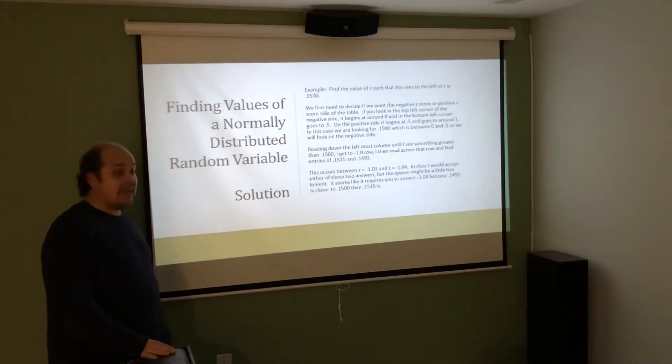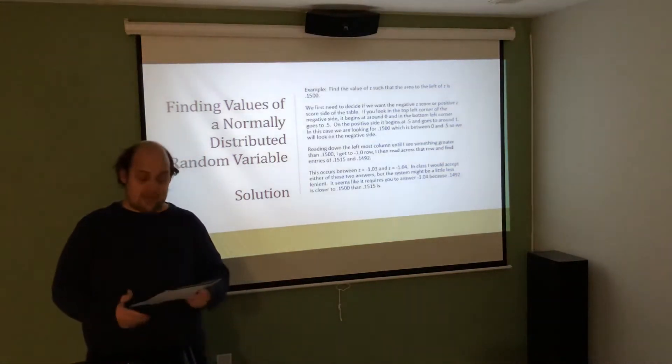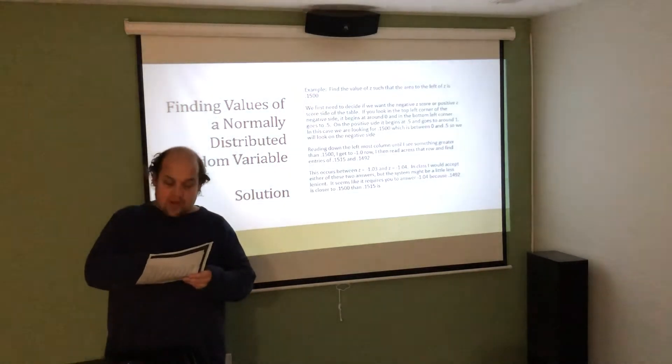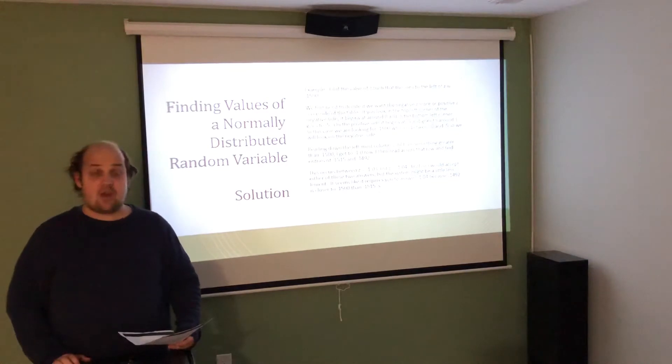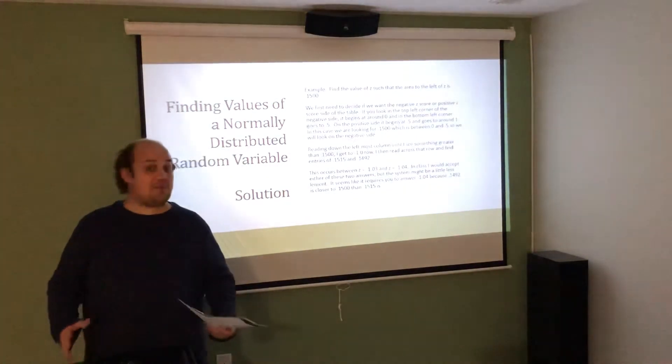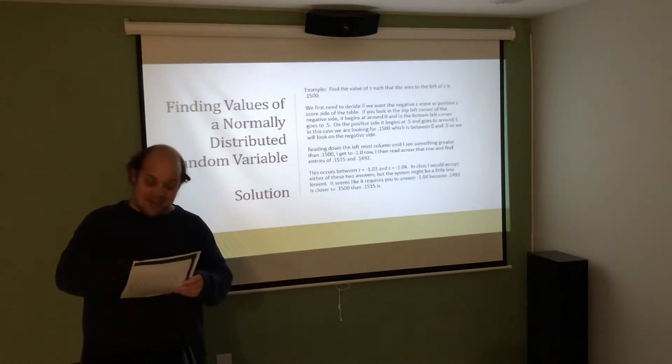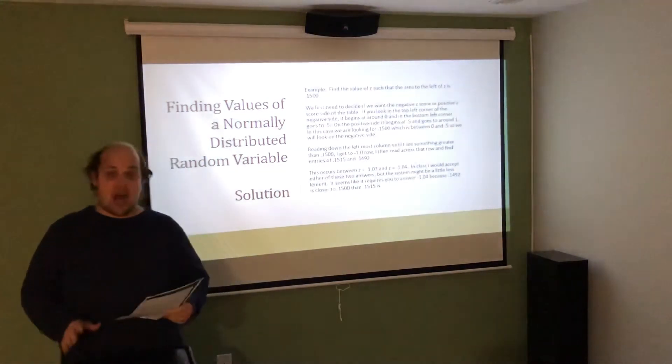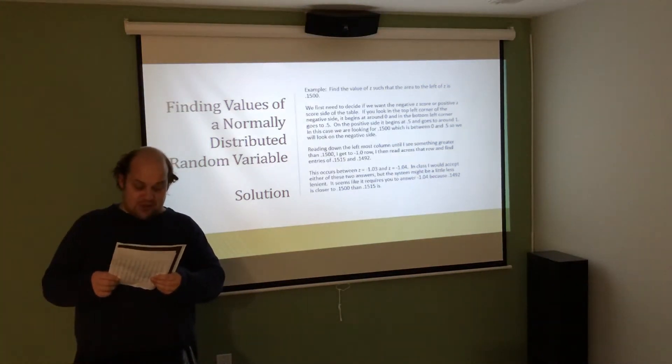Since 15% is less than 0.5, we should go to the negative side. Once we're on the negative side, I go down the first column until I see something bigger than 0.015. As I'm reading down, I see that in the row marked negative 2.2 is 0.0139. In the row marked negative 2.1 is 0.0179. So I know that 0.0150 occurs somewhere between those two. So, apologies, that wasn't the right thing. I'm not looking for 0.015. That would be 1.5%. I'm looking for the 15th percentile, so I need to go even further down. I see that in the row negative 1.1, I get 0.1357. And in the row negative 1.0, I get 0.1587. I'm looking for 0.1500. So once I go to something larger, I know what's happening in the row above.